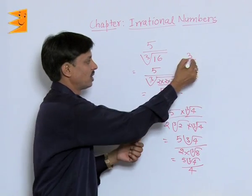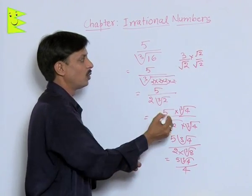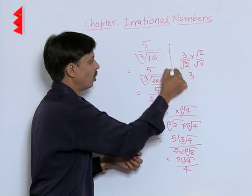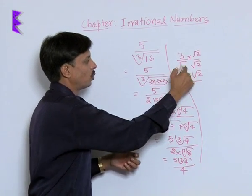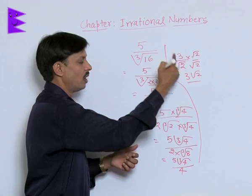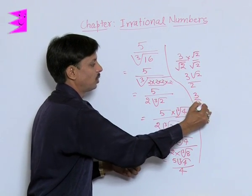If you take this you have to multiply numerator and denominator both by root 2. You will get to know that this is 3 root 2 upon root 2 into root 2 is root 4. Now, square root of 4 is 2. This becomes 3 by 2 root 2.